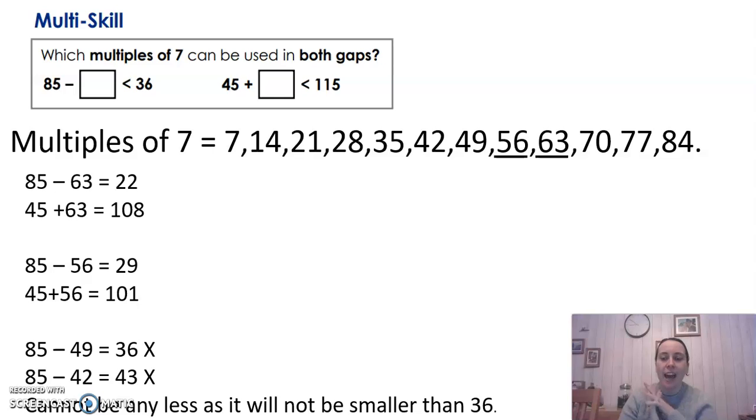So the two multiples of 7 that I found that could be used in both gaps, there's 56 and 63. Now, what I also did to make sure I wasn't missing any is I just kept checking.